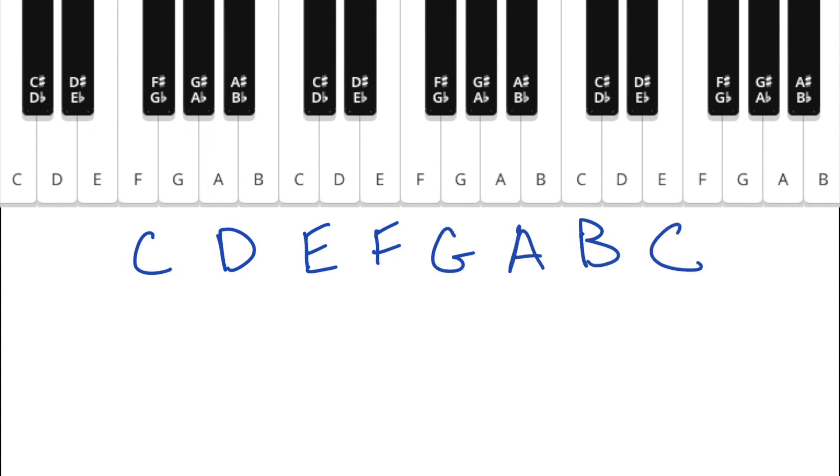You'll remember about the musical alphabet that there's only seven letters in the musical alphabet. We go A, B, C, D, E, F, G and then we start over at A.